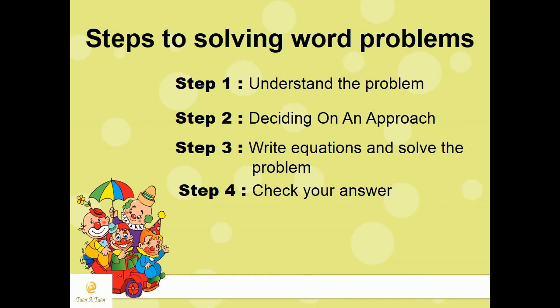Following George Polya's suggestion, there are 4 steps to solving mathematical problems. The first step is to understand the problem by reading it slowly and highlighting key information. The second step is to devise a plan or decide on an approach. The third step is to implement the plan by writing equations to solve the problem. The fourth step is to check the answers.